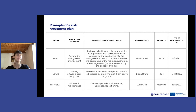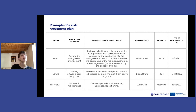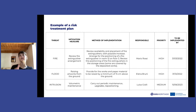In this slide we have put an example of a risk treatment plan. On the left there is the threat and the mitigation measure that has to be implemented, along with a description of the methodology for implementing those specific measures. It also indicates who is responsible for the implementation of the mitigation measures, as well as a priority level and a date by which the mitigation measure has to be implemented.